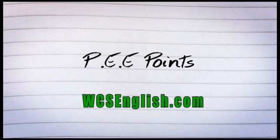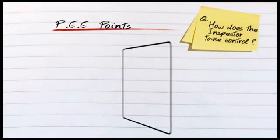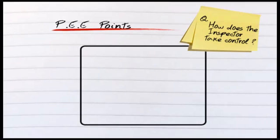Now we'll be looking at PEE development in the main part of your essay, and that was what we denoted earlier with this square. How does the inspector take control? Your main part actually has to develop fully.